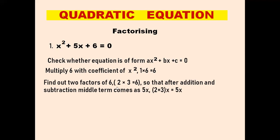The next step is to find two factors of 6. The factors here are 2 and 3, because 2 multiplied with 3 gives us 6. We find factors such that after addition or subtraction the middle term comes as 5x. We know 2 plus 3 is 5, so we get 5x by adding 2 and 3, and 2 times 3 gives 6. So we write x² plus 2x plus 3x plus 6 equals to 0.